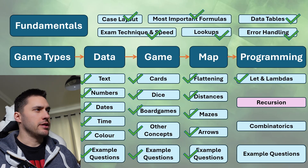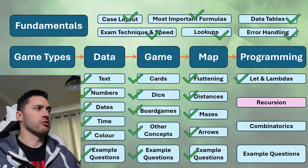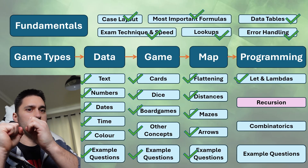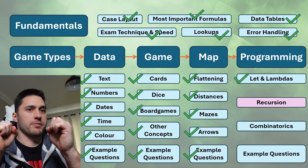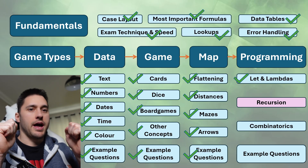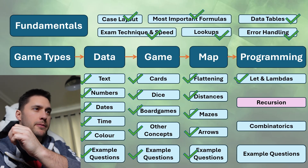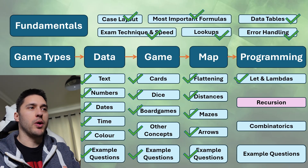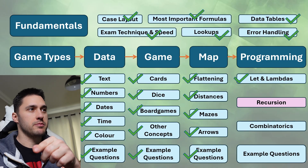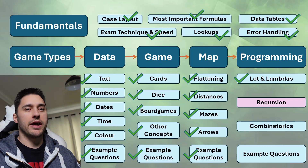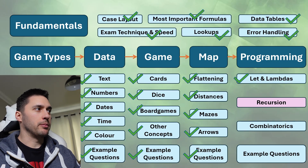Recursion is basically doing something over and over again. In the context of Excel, we can think of an input — we do a formula or something to it, and then we get an output. That output then becomes the input, and we do the thing again and get a new output, and so on. We'll do that either up to a stopping point or a certain number of times.